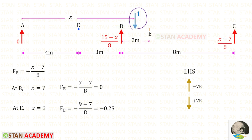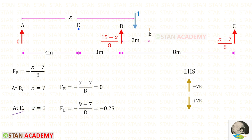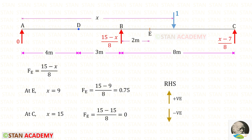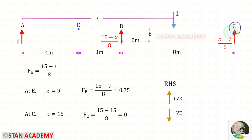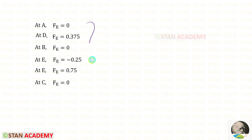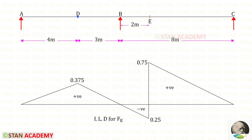Now, let us keep the unit load between B and E. Up to point E, we have only RC acting upwards, so it will be negative. At point B, X will be 7, so Fe will be 0. At point E, X will be 9, so Fe will be minus 0.25. Now, let us keep the unit load between E and C. We can use the right-hand side rule. Up to point E, we have only RB acting upwards, so it will be positive. At point E, X will be 9, so Fe will be 0.75. At point C, X will be 15, so Fe will be 0. Using these values, we can draw the ILD for the shear force. At point E, we have found two values: one to the left of E and one to the right of E.